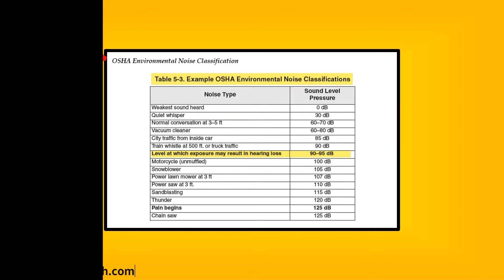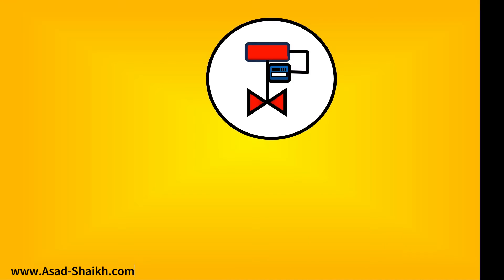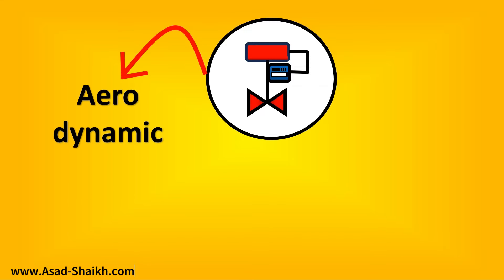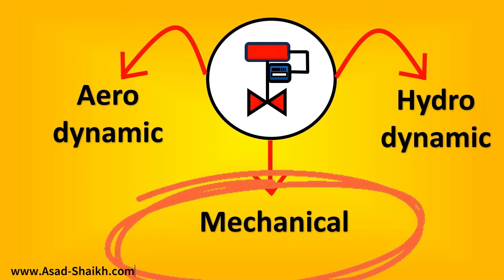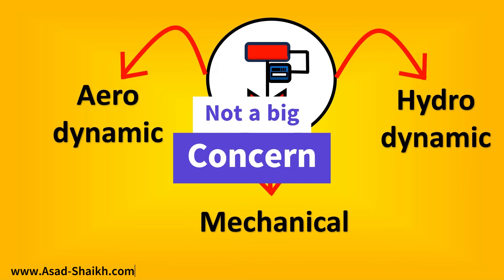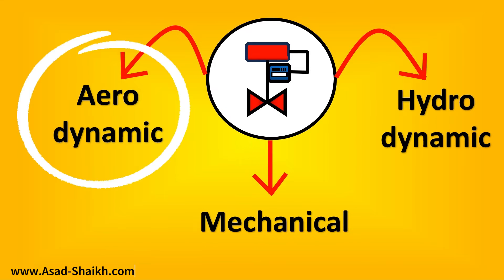Basically, the noise in control valves can be divided into three types: aerodynamic noise, hydrodynamic noise, and mechanical noise. Mechanical noise is because of the mechanical components of the valve, but it is not very much a concern point for us. Aerodynamic noise is related to gases and the noise generated because of the flow of gases. Hydrodynamic noise is related to fluids, and the major contributing factor has been cavitation for it.